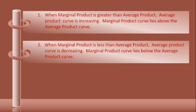Second, when the marginal product is less than the average product, the average product curve is decreasing, and the marginal product curve lies below the average product curve.